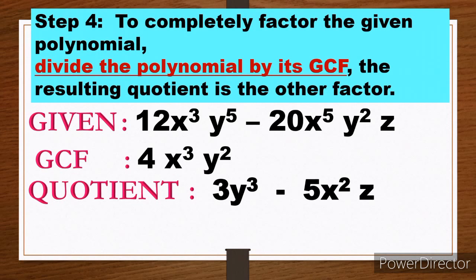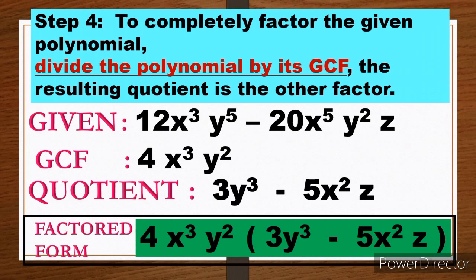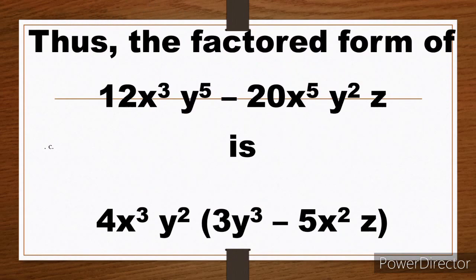For the second term: −20 ÷ 4 = −5. x⁵ ÷ x³: subtract exponents, 5 − 3 = 2, giving x². y² ÷ y²: 2 − 2 = 0, so y² cancels. Then we have z remaining. The quotient is 3y³ − 5x²z. So the factored form is 4x³y²(3y³ − 5x²z).